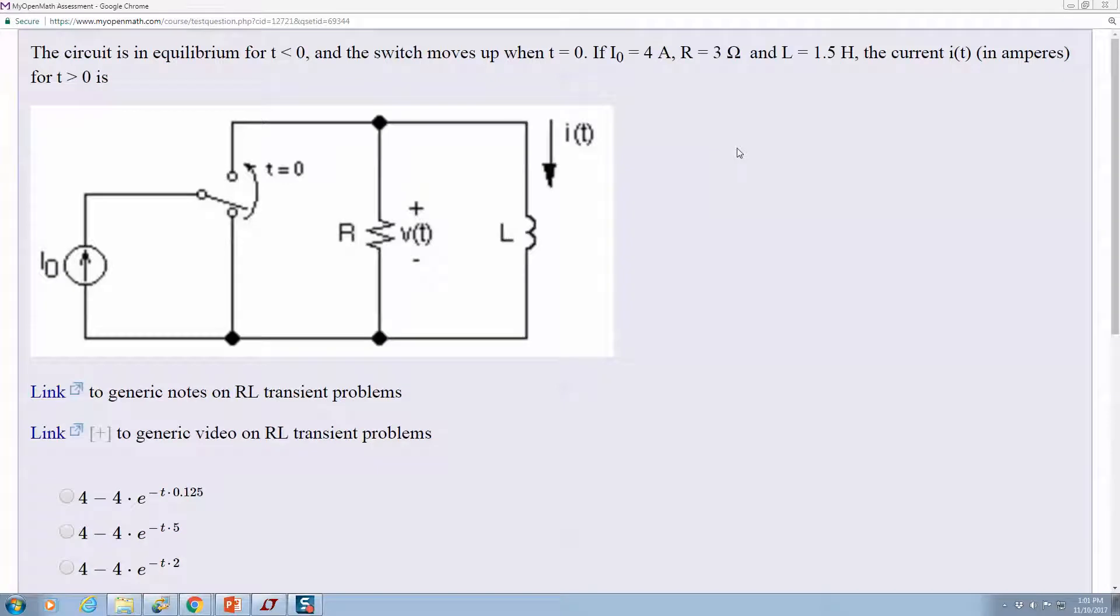This is a quick video on how to do the step response of an RL circuit. It assumes you've seen these other links. Initially, this current is just recirculating here and all the energy would be dissipated, so the current through the inductor would start off at zero.